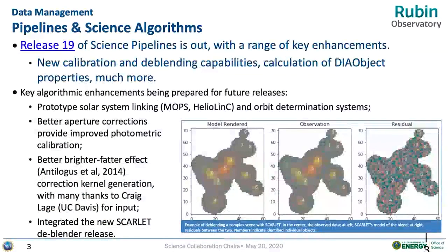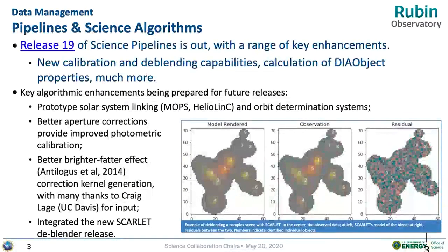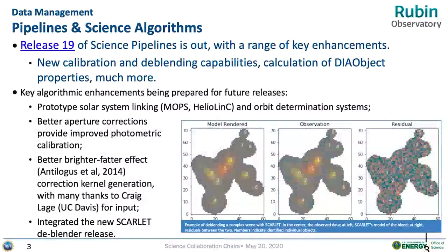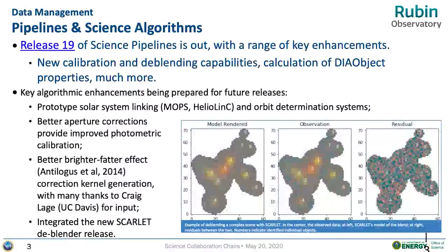On the data management side of things, over the last quarter or so there's been a lot of progress. Release 19 is out, and there's been a range of key enhancements made — in particular in the area of calibration and de-blending, and also the calculation of difference imaging objects.